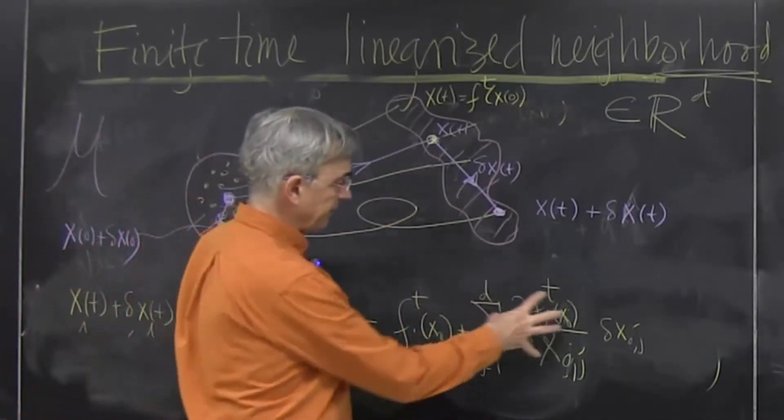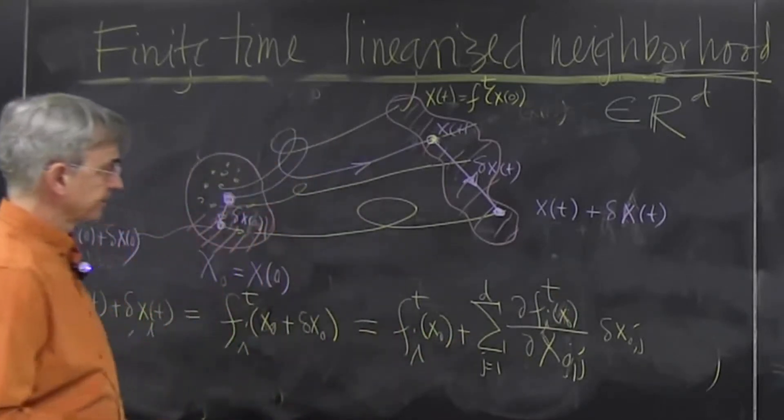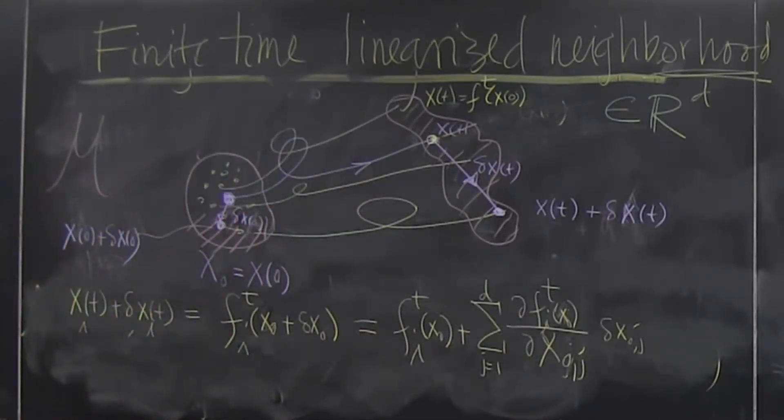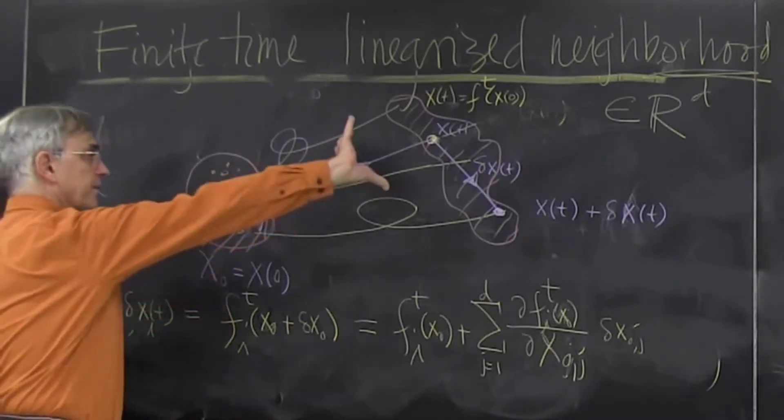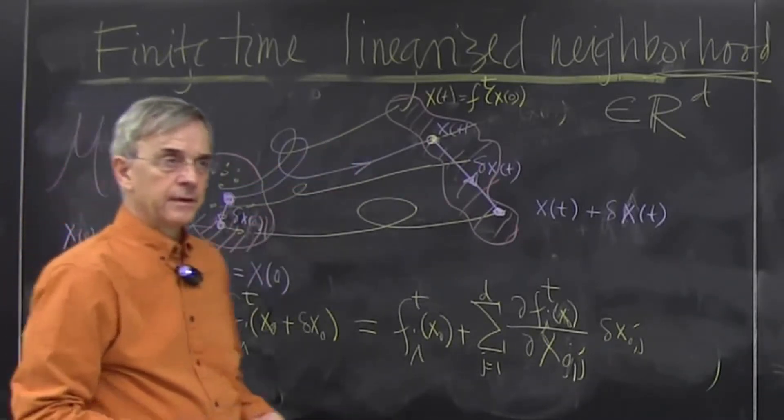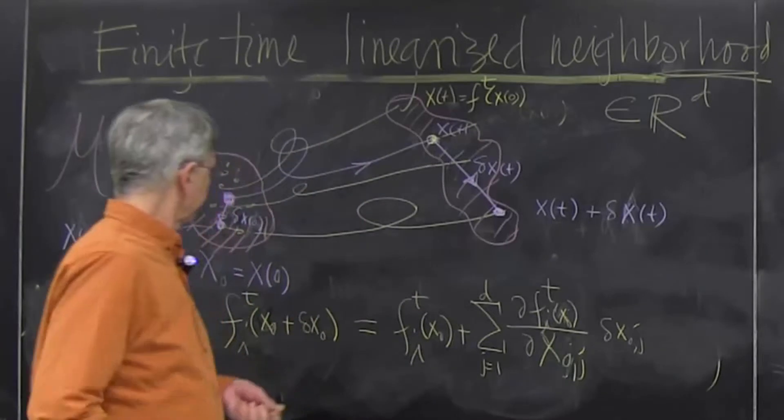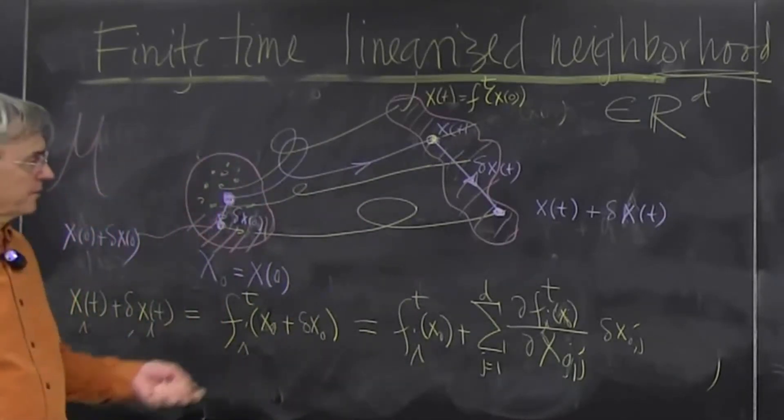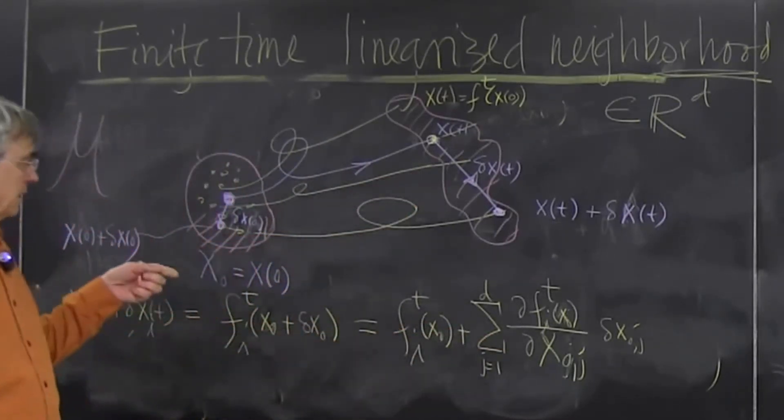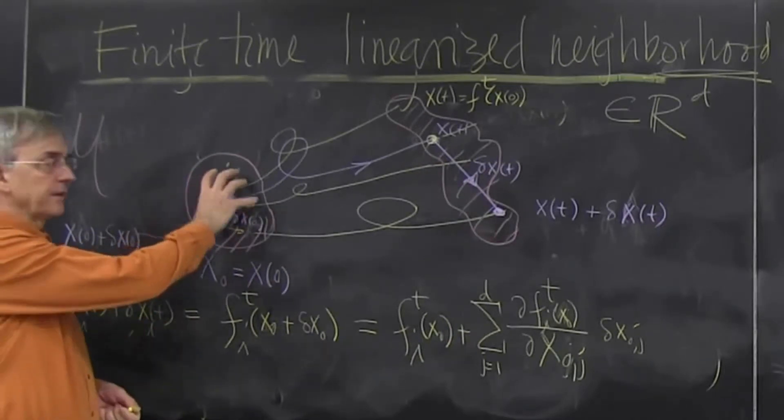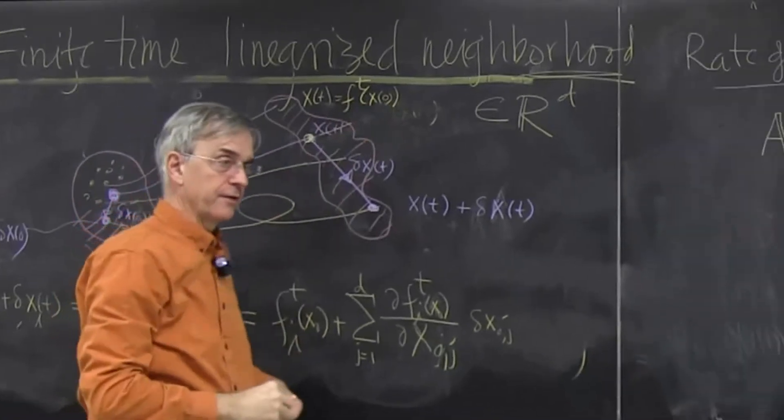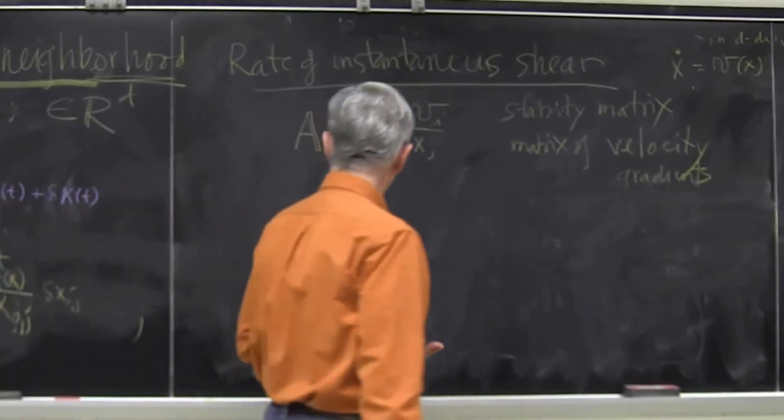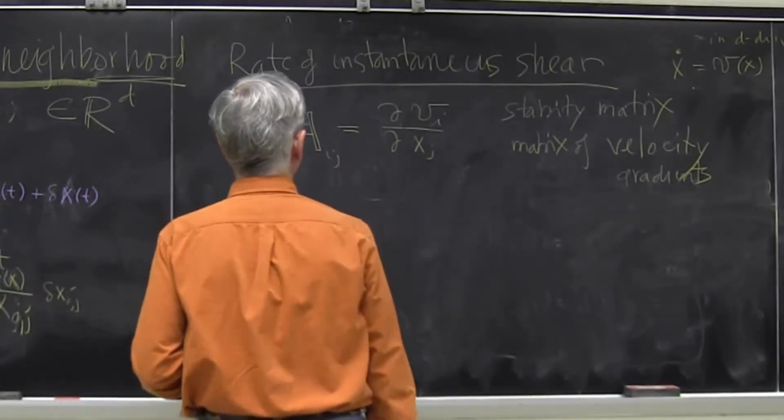And now, it's this object that, in linear approximation, tells us how this is going to deform. And in linear approximation, deformations cannot be too wild. So basically, if I start with a sphere, this will give me an ellipsoid, turned around some distance. But that will be very good for us.